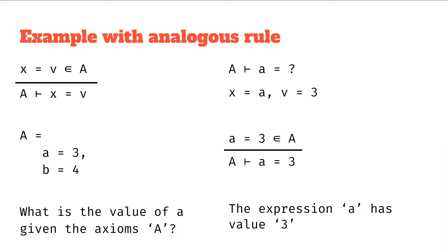And the bottom part tells us, well, from our axioms, it follows that A has value three, which is the thing we were trying to prove. And so we can say the expression A has value three at the end of it.